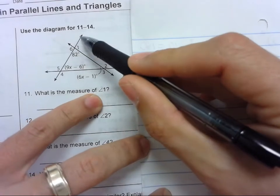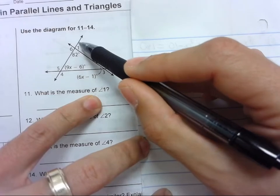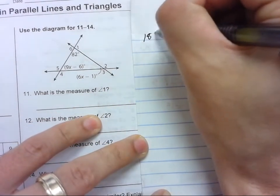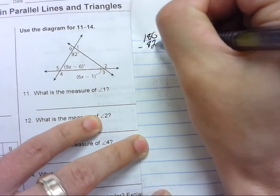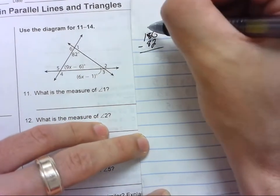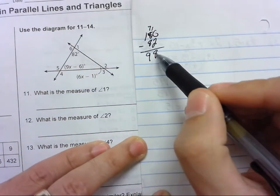So we know that this is a straight line, so this angle plus angle 1 will equal 180. So for angle 1 we can simply do 180 minus 82, and we get... 17 minus 8 is 9, so the answer for 11 is 98.